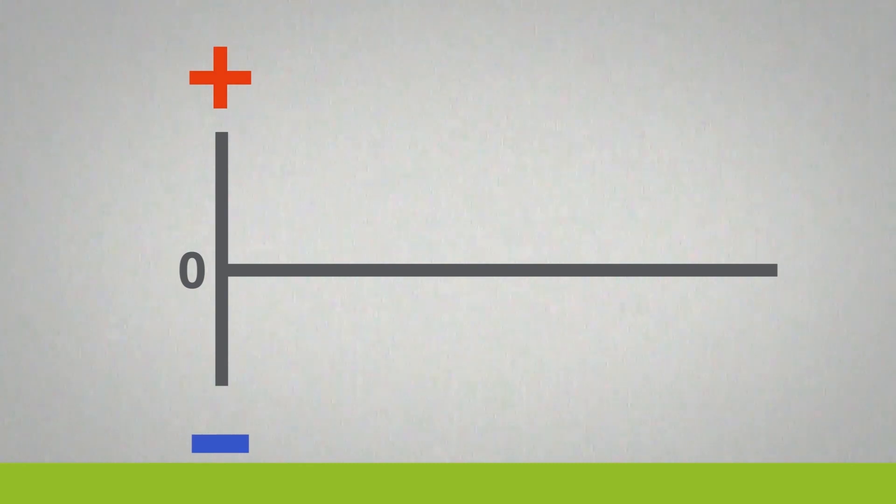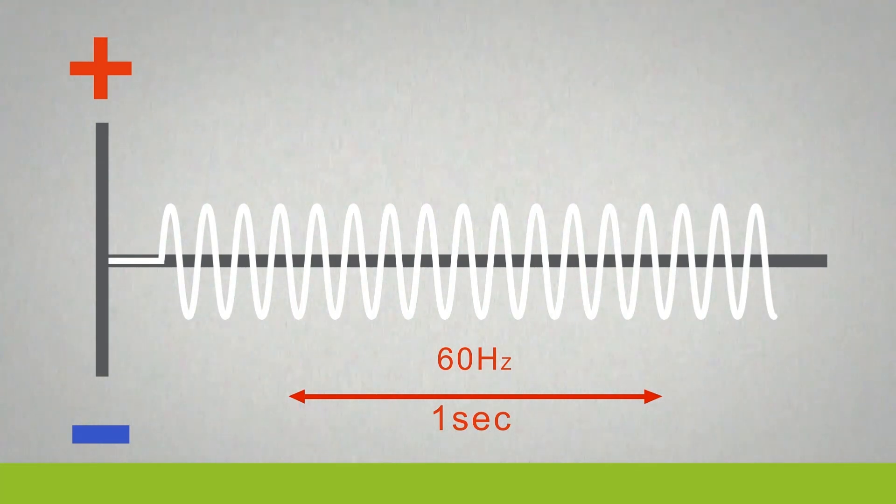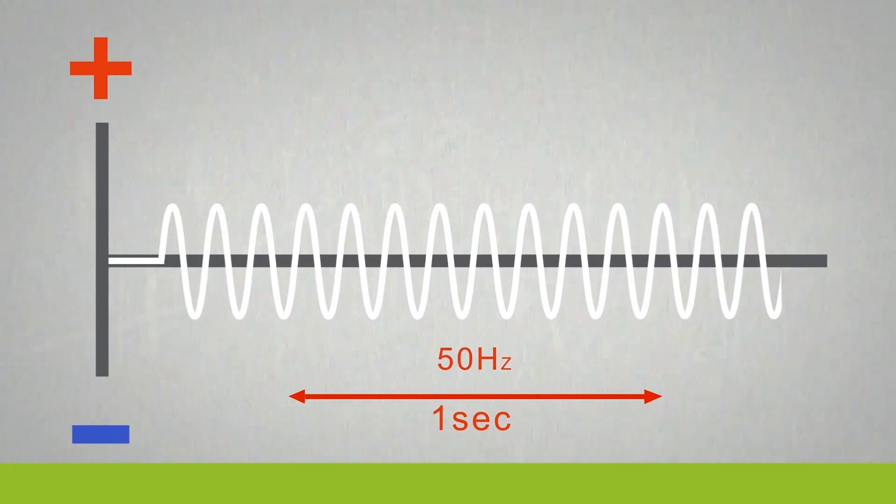One complete cycle is from zero to maximum positive, back to zero, to maximum negative and again back to zero. That's called a hertz. In North America we have 60 hertz per second and most of the rest of the world uses 50 hertz per second.